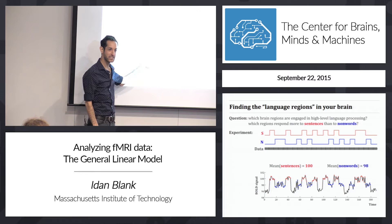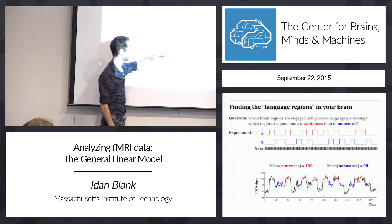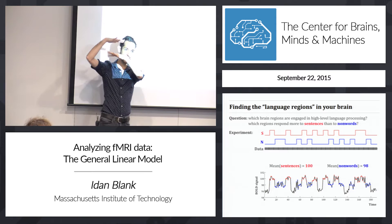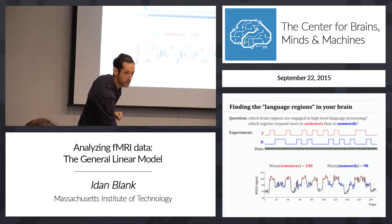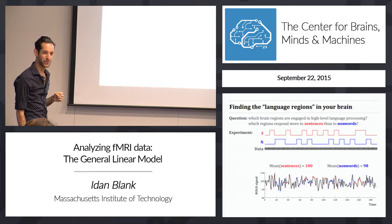In one signal, the response to sentences is always very large — consistently around 100 — and the response to non-words is always consistently around 98. In that case, I'd say yeah, this difference is real. But you can also get a signal where again the average of the red dots is 100 and the average of the blue dots is 98, yet the signal doesn't really change between sentences and non-words and any difference seems to be just random chance.